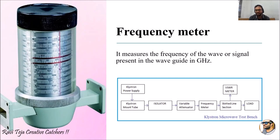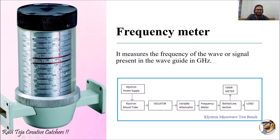Next comes the frequency meter, which measures the frequency of the wave or signal present in the waveguide in gigahertz. The microwave signal generated by the klystron mount passes through the isolator, then the variable attenuator, and reaches the frequency meter. Using this frequency meter we can measure at what frequency the signal is flowing in the microwave bench setup.